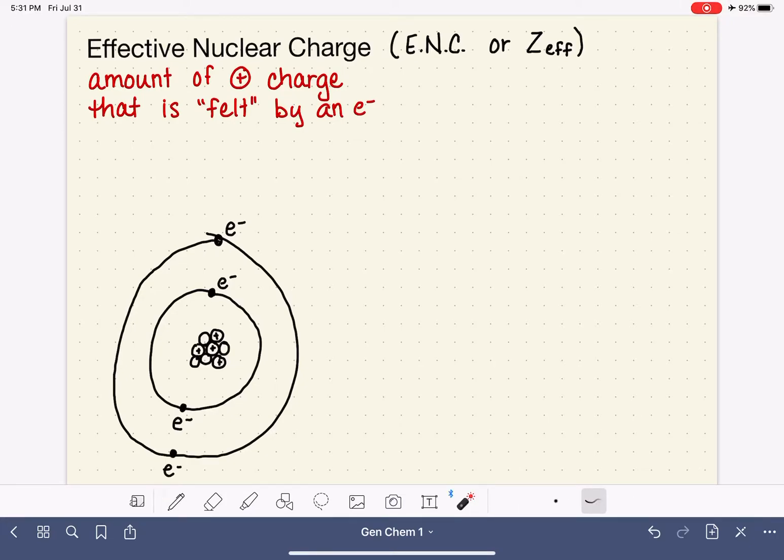Now let's think about effective nuclear charge from the perspective of this guy right here. This electron is even further away from the nucleus, so its positive charge is going to be watered down by the distance even more than what we saw for this guy right here.